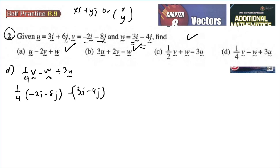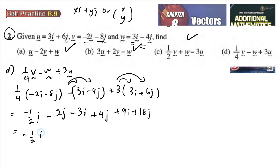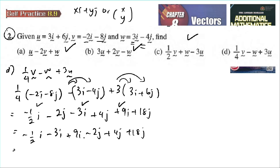Note: if you don't have a bracket, you would be computing incorrectly. For part d, we have a term with one quarter. One quarter times 2 gives negative one half i, and one quarter times negative 8 gives negative 2j. Then minus 3i, and plus 3u which is 3 times (3i plus 6j) giving 9i plus 18j. Grouping i terms: negative half minus 3 plus 9 gives negative 7 over 2 plus 9, which equals 11 over 2.